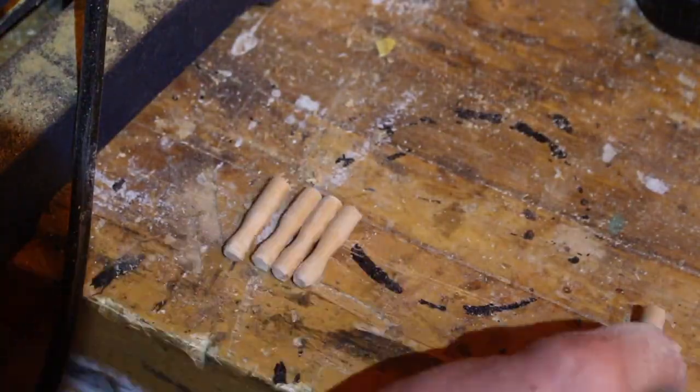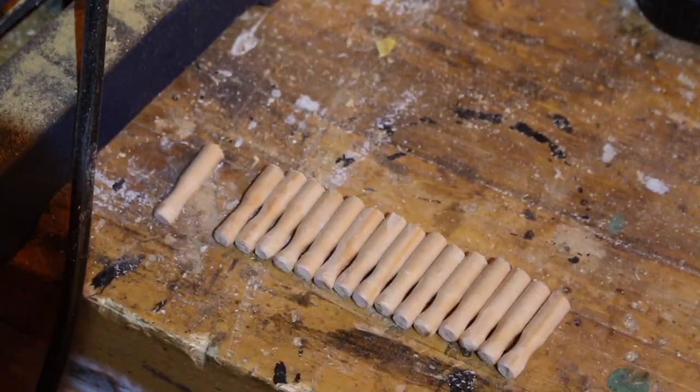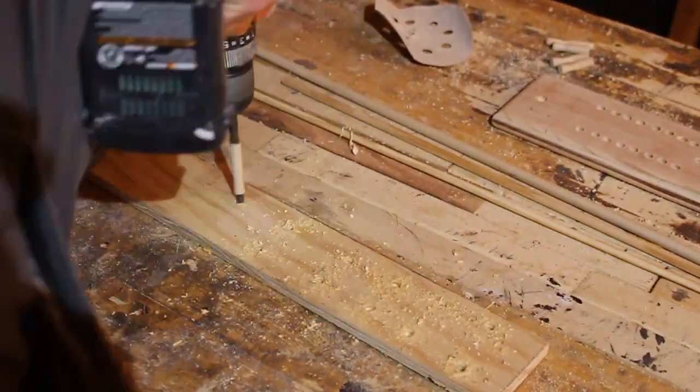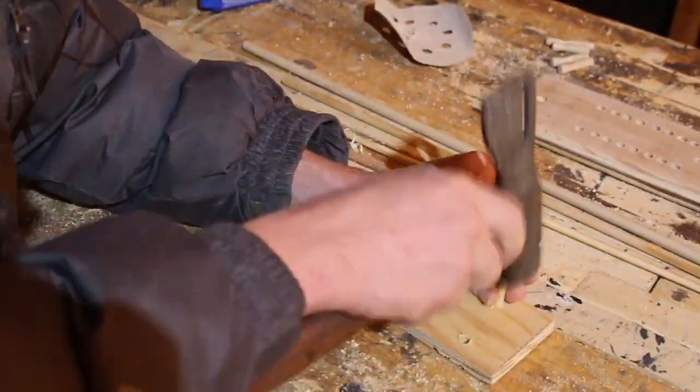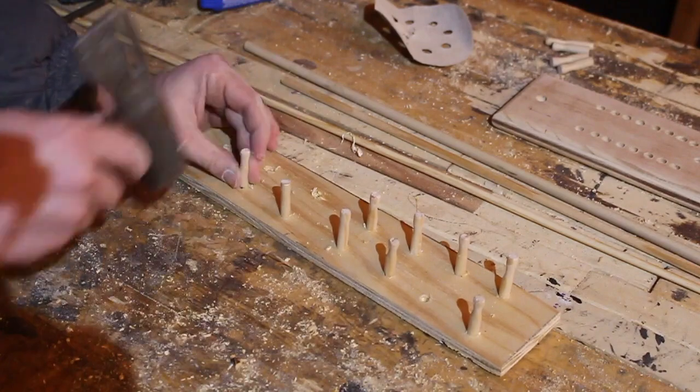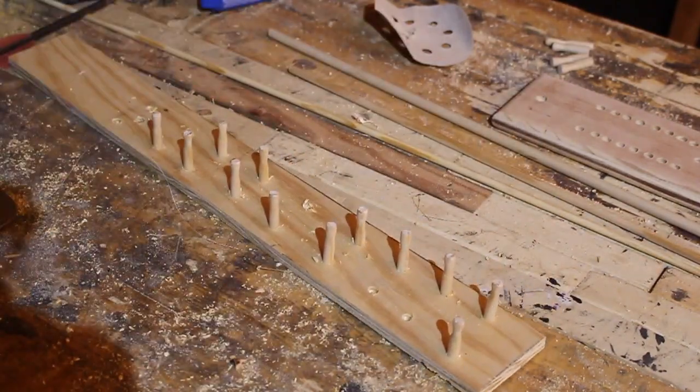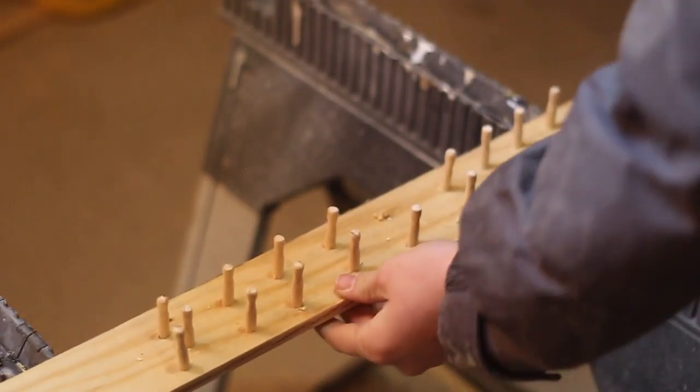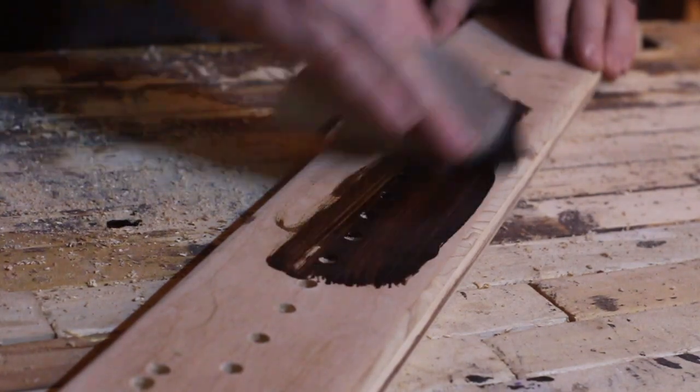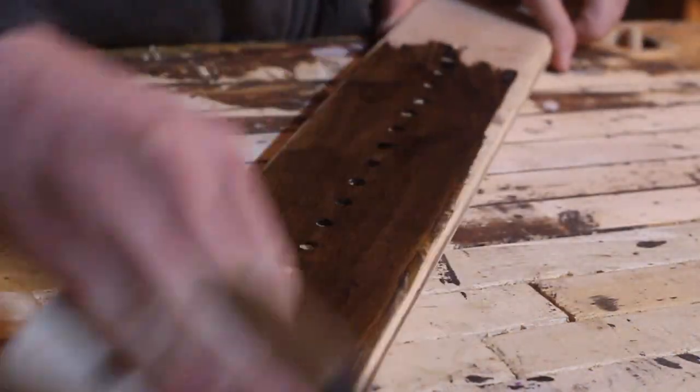I drilled a bunch of holes into a scrap piece of plywood so that I could stick all the dowels into it so that it would be easier to paint. I just spray painted every single dowel white, and as those were drying I went ahead and decided to stain the board because I'm trying to make this project look nice and feel nice.